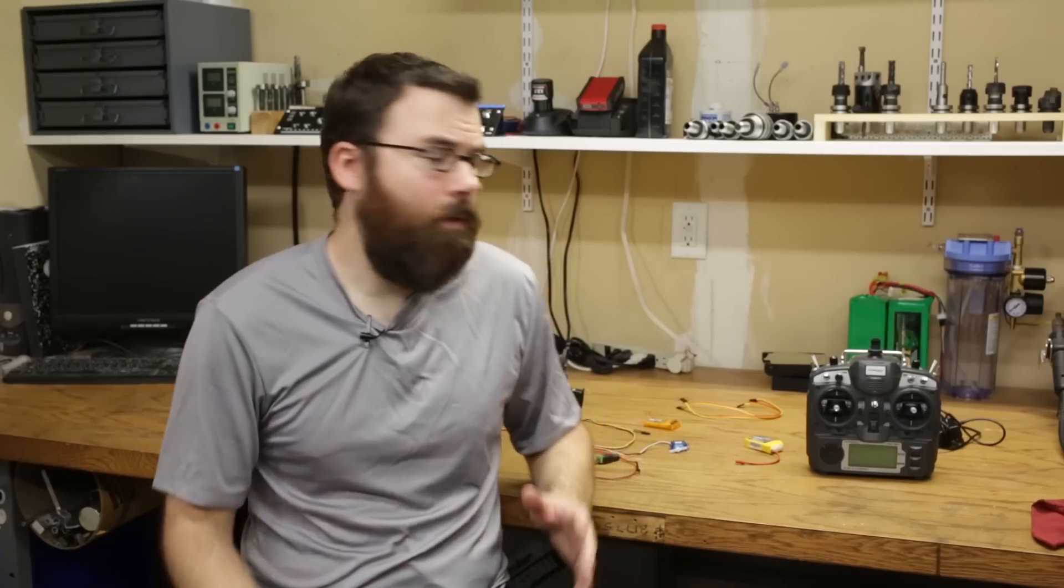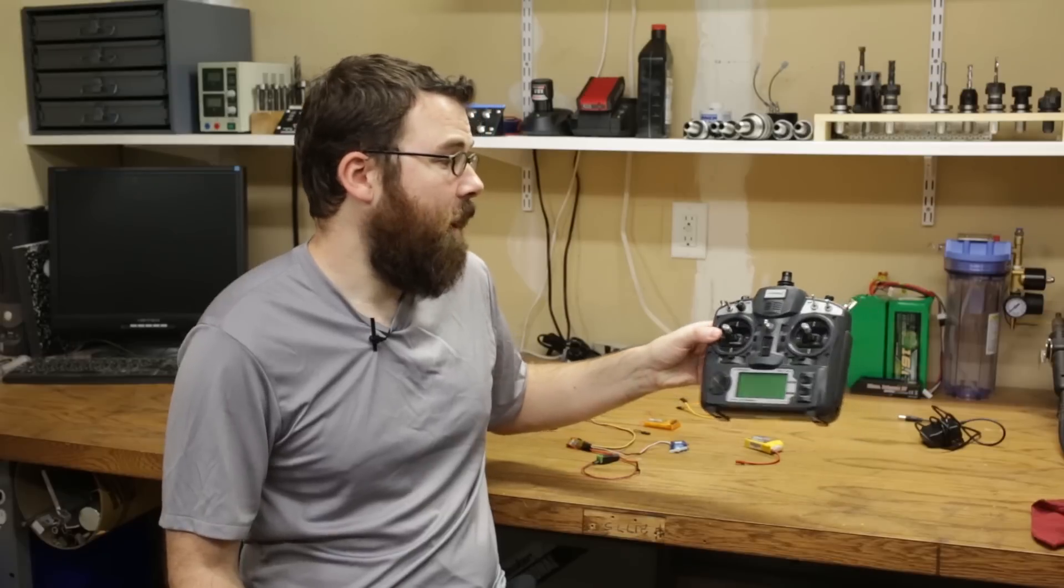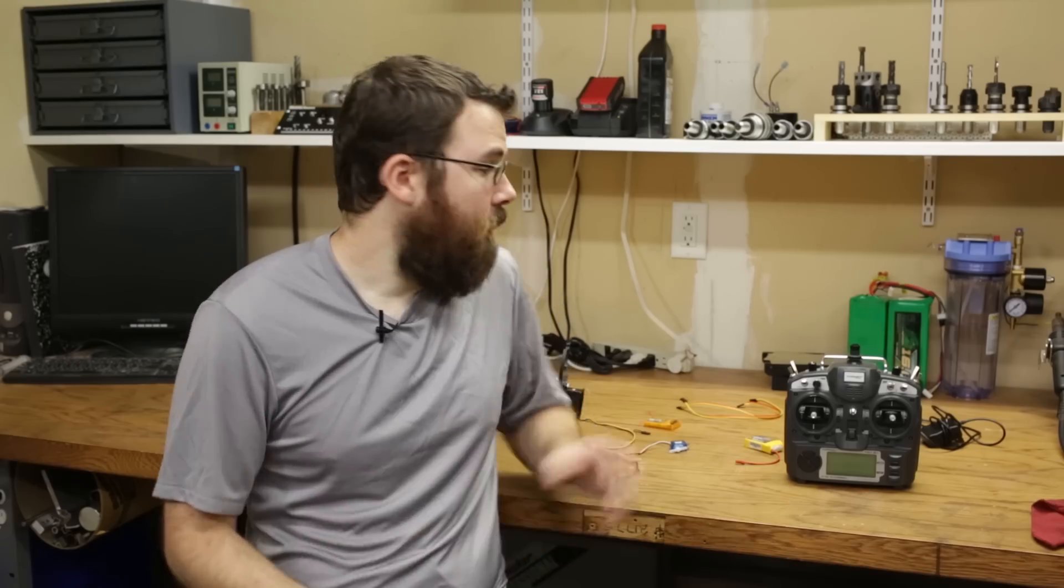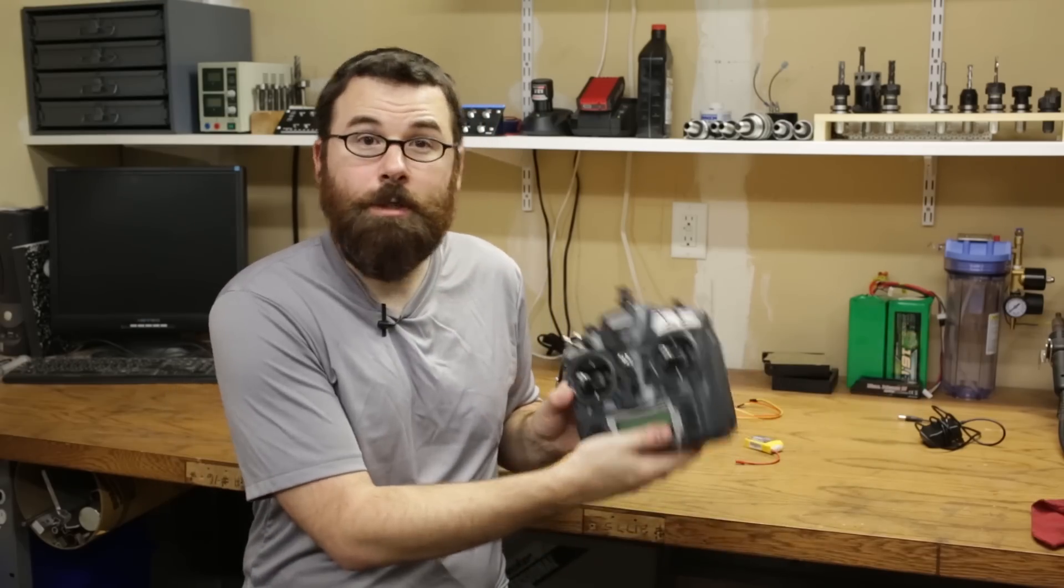I'm going to split this video into kind of three or four major parts. I'm going to start with the control aspect, which is the radio and the receiver, then the power side of it, the battery and the power switch and everything else, and then finally the motor controllers and the motors themselves. So let's dive right in and start talking about the RC transmitter.